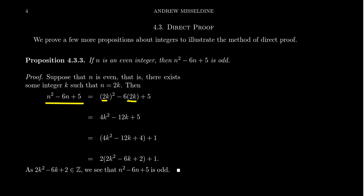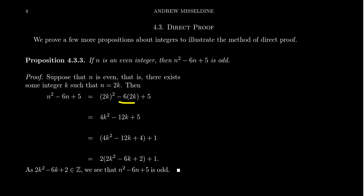We start with the value we're considering for our conclusion: n squared minus 6n plus 5. We replace each n with 2k, giving us 2k quantity squared minus 6 times 2k plus 5. Doing the algebraic calculations: 2k squared equals 4k squared, negative 6 times 2k equals negative 12k, plus 5. Our goal is to write this as 2m plus 1, where m is any integer — we need to find a 1 and a 2.